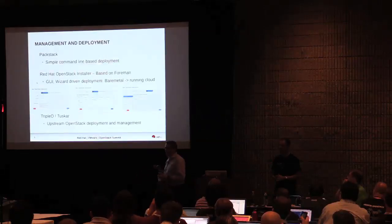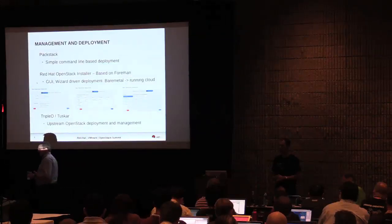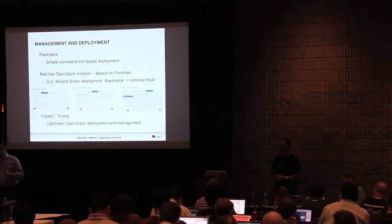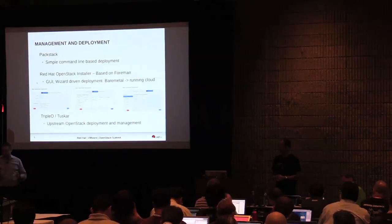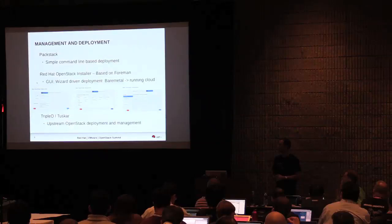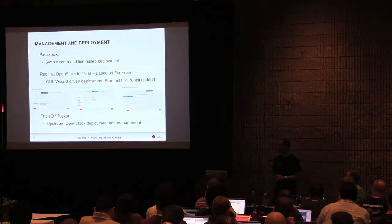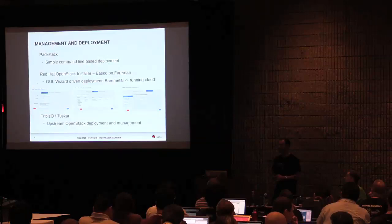For deployments, three projects to mention. First is Packstack — a very simple tool for POCs. You run a command-line tool, answer some questions, and it will deploy a single-node or multi-node cloud. For production deployments, we have the Red Hat OpenStack installer based on Foreman — boot a USB key or CD-ROM, go through a wizard, see the discovered nodes, configure them, checkbox for HA, and you're fully deployed. And finally, TripleO, the upstream deployments and management project — still a work in progress, but we're heavily invested upstream on it.